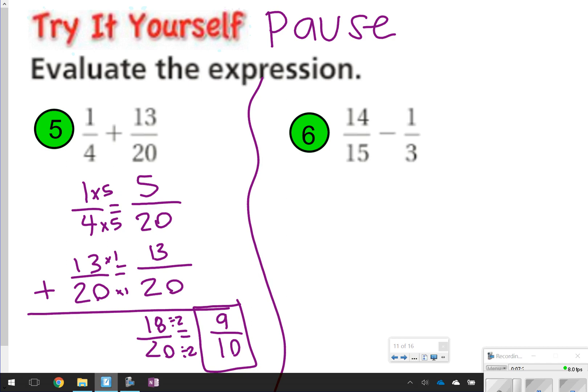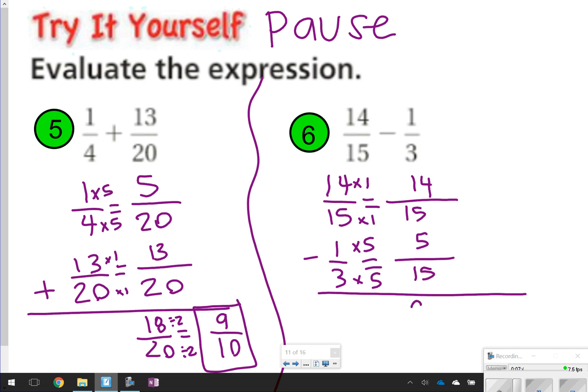Number 6, similar things happen in here. 14 fifteenths minus 1 third. I need a common denominator. Both 15 and 3 can go into 15. 15 goes into 15 once, so 14 times 1 is 14. 3 goes into 15, 5 times, so 1 times 5 is 5. 14 take away 5 is going to give me 9 fifteenths. Simplify, because both 9 and 15 have 3 in common, to get 3 fifths as my answer for number 6.